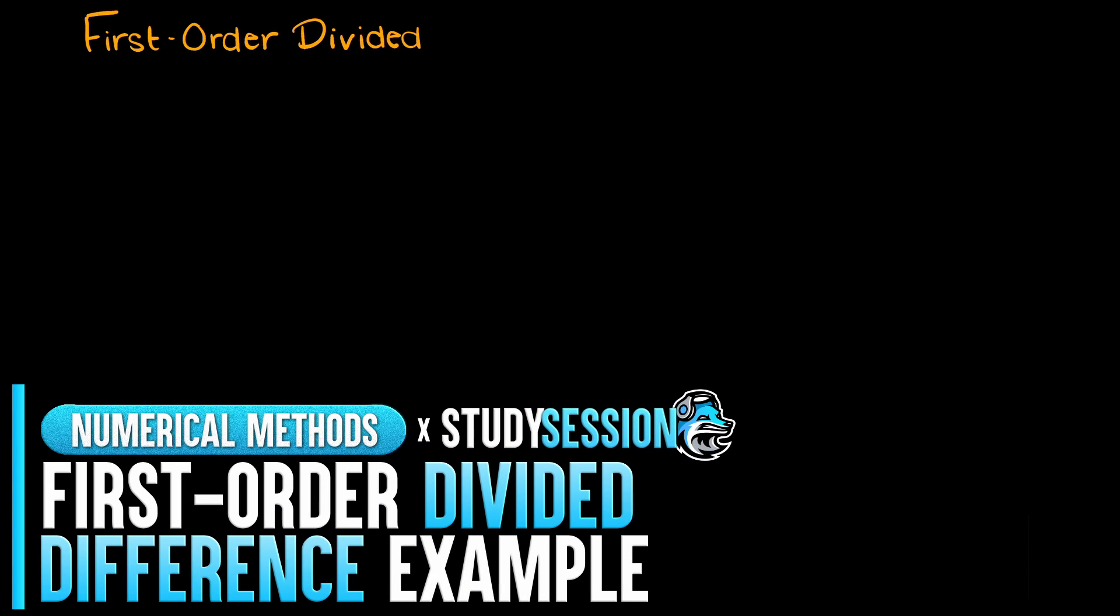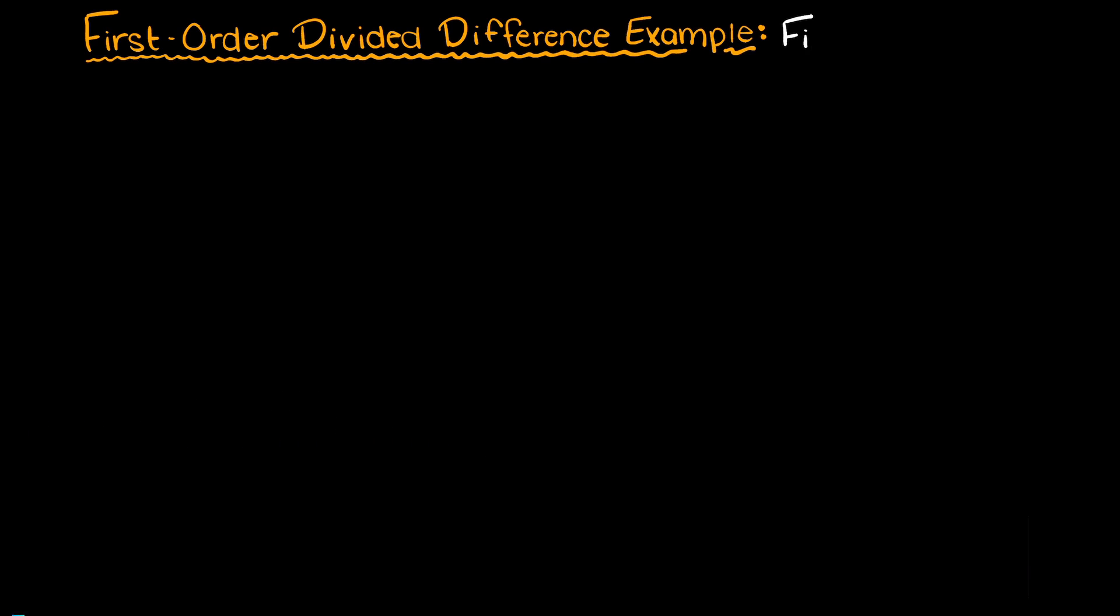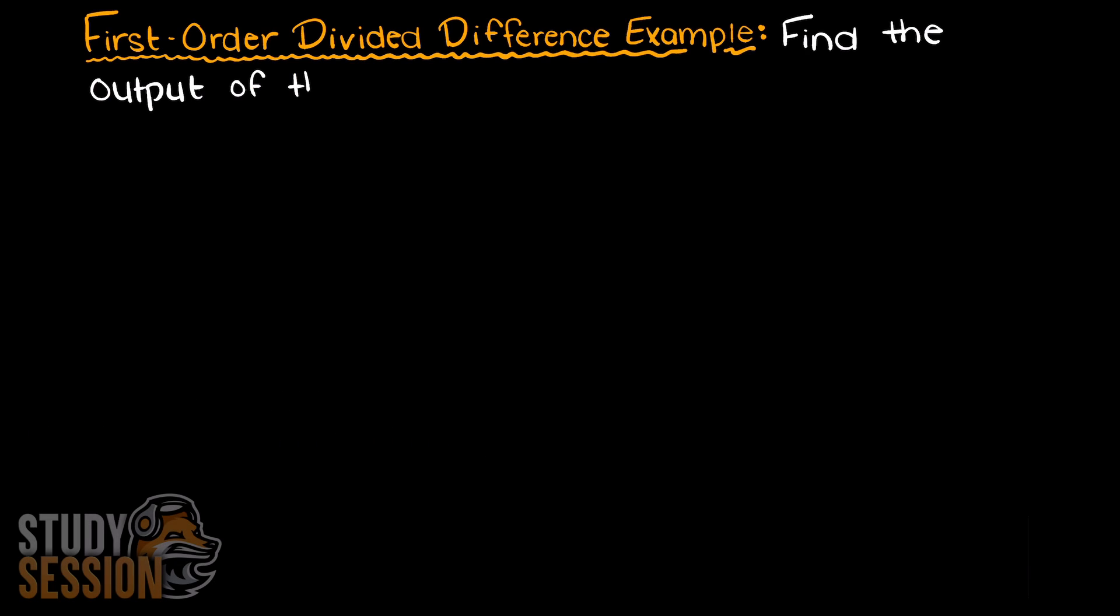Hey everyone, in this example video we are going to be walking through a first order divided difference example. We are asked to find the output of the following discrete data set for an input of x equals 2.